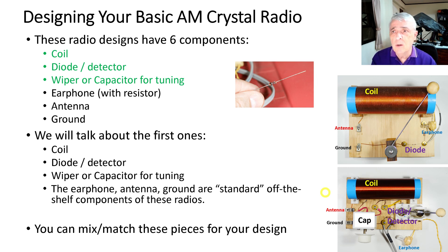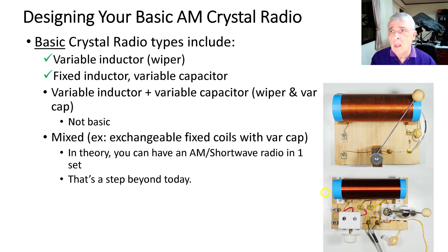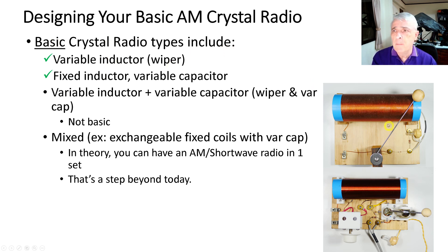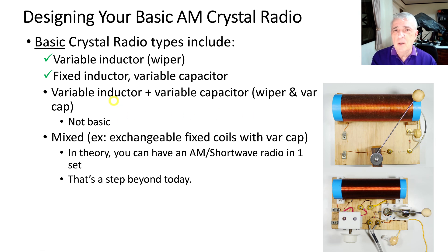The basic crystal radio types include a variable inductor, which is the wiper, and a fixed inductor with a variable capacitor — a fixed coil with a variable capacitor. When you combine a variable inductor plus a variable capacitor, that's the wiper and variable capacitor together; it's not basic so we won't cover that today.